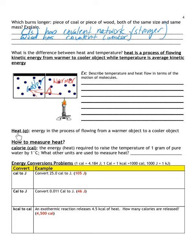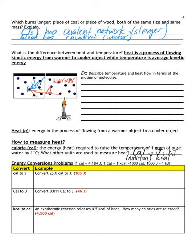Heat is energy in the process of flowing from a warmer to a cooler object. We can measure heat using units like calories. A calorie is the energy required to raise the temperature of one gram of a pure substance by one degree Celsius. Other units include big-C Calories (nutritional calories), kilojoules, and kilocalories — all variations of base energy units.